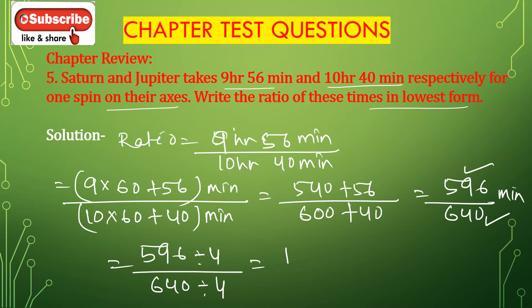So 596 divided by 4: 4 goes into 5 one time, that's 4. 4 into 19 is 16, remainder 3. 4 into 39 is 36, remainder 3. So we get 149. And 640 divided by 4: 4 into 6 is 1, that's 4. 4 into 24 is 6, that's 16. 4 into 40 is 10, so 160. So the ratio in the lowest form is 149 to 160.